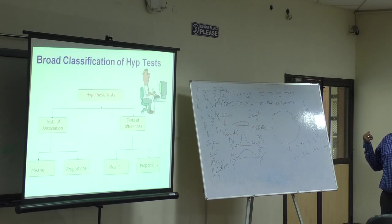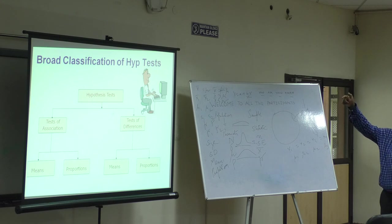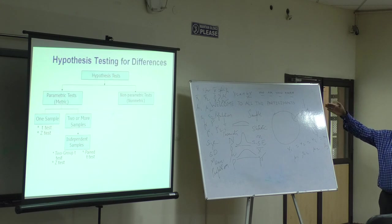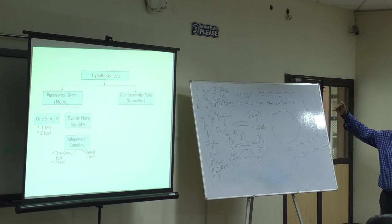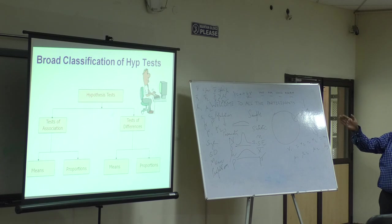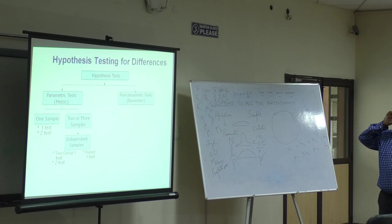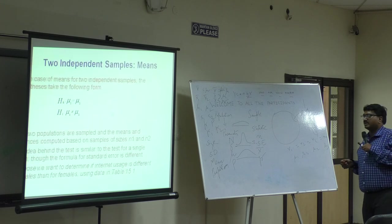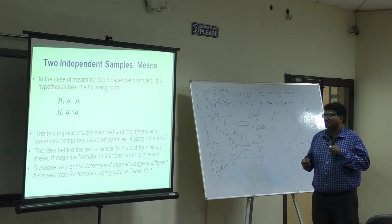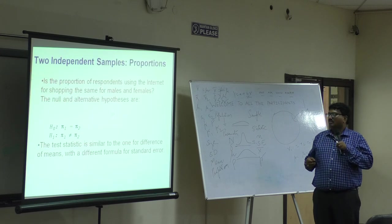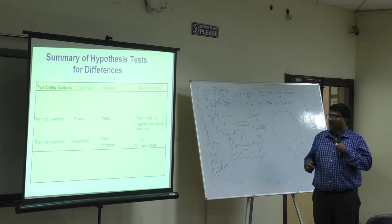This is another broad way that you look at the test, which I used a little earlier, where I said tests can be divided into two. One slide before this. Tests of association and tests of differences. Next slide now. I said parametric, I said non-parametric. It is again a summary of things that I spoke. It is over.